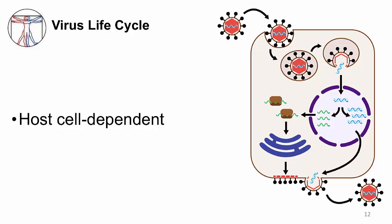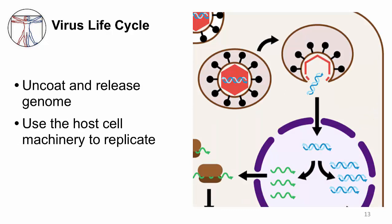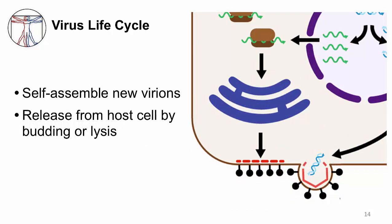Viral replication is very much host cell dependent. Taking you through each step of a generalized viral life cycle: first, the virus attaches to a specific receptor on the host cell and enters through endocytosis. The virus then uncoats and releases its genome — DNA goes into the nucleus, while an RNA genome would replicate in the cytosol. The virus uses host cell machinery to replicate its nucleic acid and make necessary proteins. These components are assembled into new virions, which are then released by budding or lysis. Enveloped viruses release with a layer of the host cell membrane.